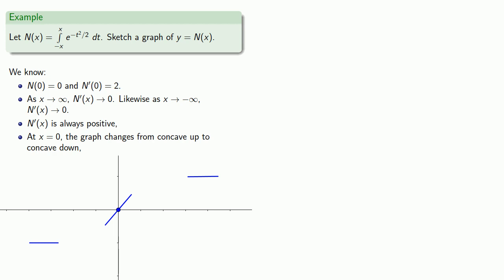So before x equals 0, our graph is concave up, and afterwards, it's concave down. And at this point, we can connect the dots to form a smooth curve.